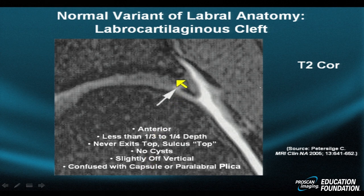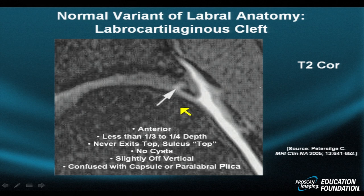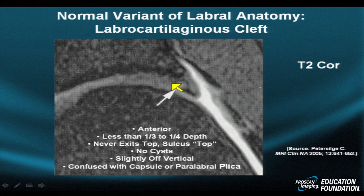We're showing a small curvilinear area of hyperintensity that extends into the superolateral labrum of the left hip. This normal variant presents tremendous challenges to those trying to interpret a labral tear. How can we differentiate this common variation from a true tear? A couple of tip-offs: first, the sulcus is shallow. If it's a developmental fissure, it will also be very shallow. The sulcus has a rounded top or configuration.